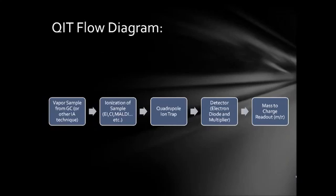This is a flow diagram of QIT. It usually will come off of an AI technique such as GC or LC, and once the sample comes off of that, it needs to be ionized before the QIT can use it.